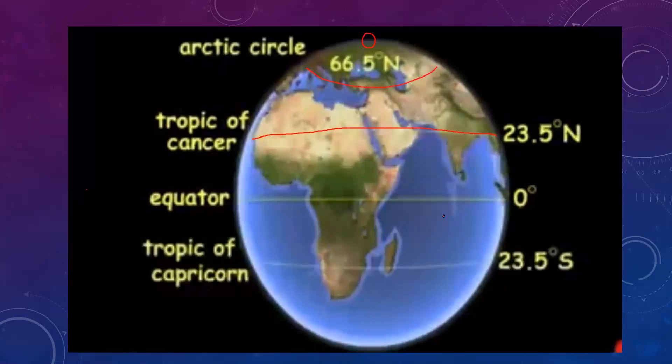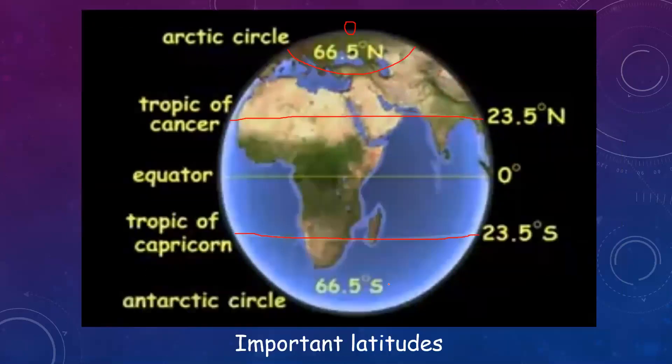In the same way in the southern hemisphere, at 23.5 degrees south, the latitude is called the Tropic of Capricorn. At 66.5 degrees south, the latitude is called the Antarctic Circle. The South Pole is at 90 degrees south. I am not showing the tilt of the earth here children.